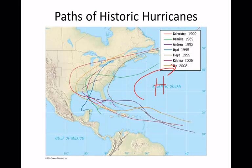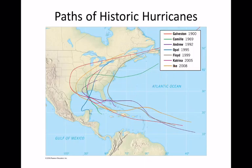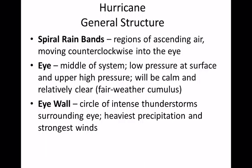The Galveston, Texas hurricane was the deadliest — Galveston got hit twice, in 1900 and then again in 1915. Other notable storms include Camille, Andrew, Katrina, and Floyd. If a hurricane was terribly deadly, that name will never be used again — it's what we call retired. That's one of the rules of naming hurricanes.